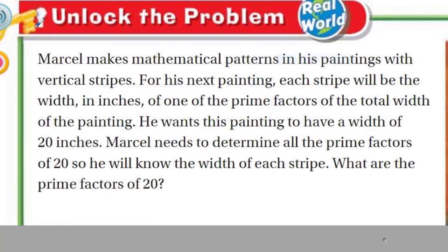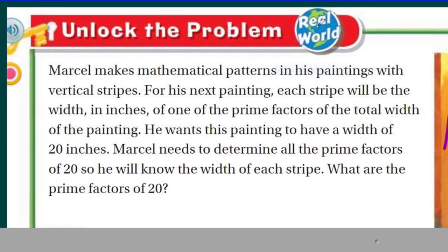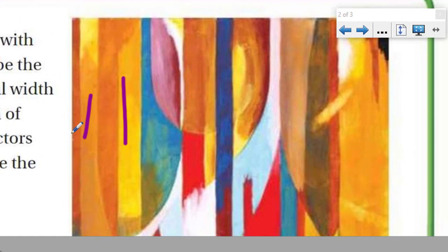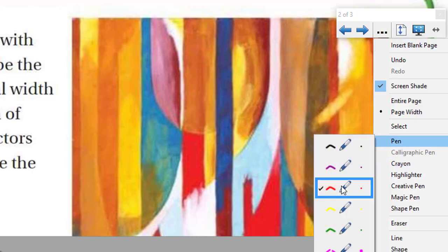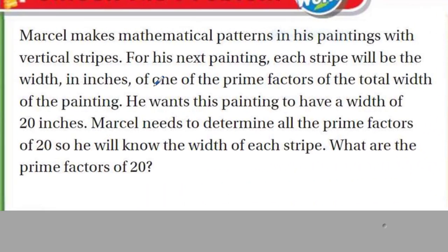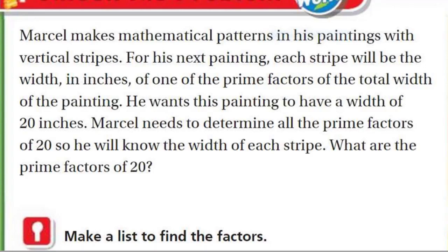We have a word problem. It says Marcel makes mathematical patterns in his paintings with vertical stripes. For his next painting, each stripe will be the width in inches of one of the prime factors of the total width of the painting. He wants his painting to have a width of 20 inches. Marcel needs to determine all the prime factors of 20 so he will know the width of each stripe. What are the prime factors of 20?